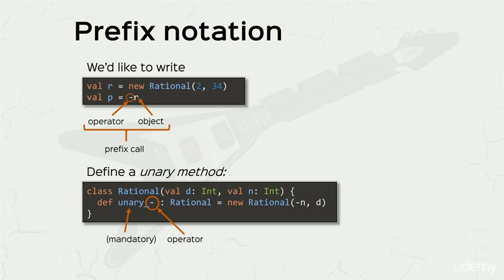Now be mindful though, the unary underscore is available only for a few operators. Plus, minus, bang, which is often used for booleans, and the tilde.